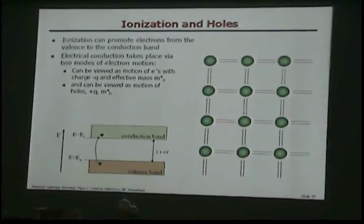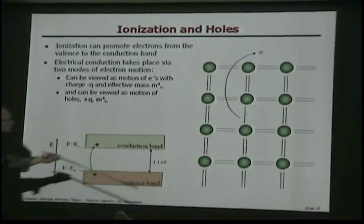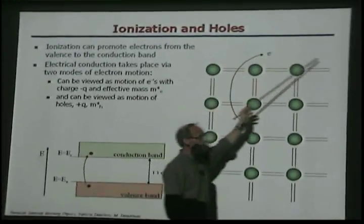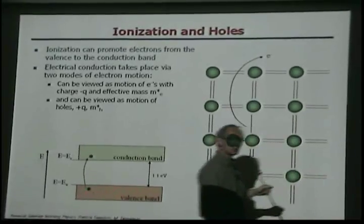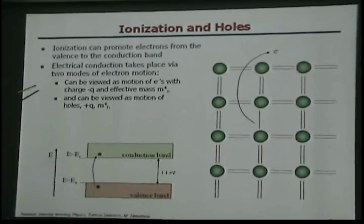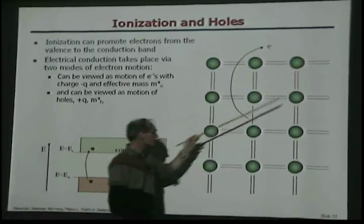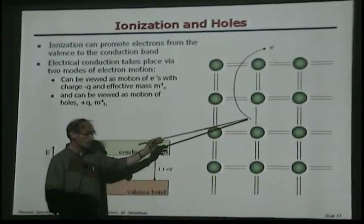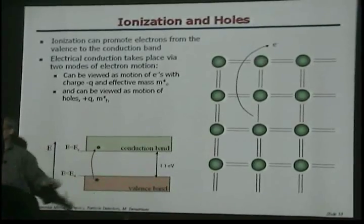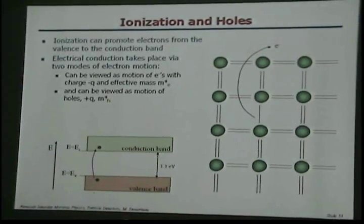Now, if a particle goes through here, it ionizes the material. What happens is I can take one of these electrons from a covalent bond and liberate it, so this electron can travel freely through the lattice. Current in a semiconductor is described in two ways: either as the motion of an electron, but the electron leaves a hole — a gap — and this hole can also travel. So conduction is the conduction of electrons in the conduction band and holes in the valence band.